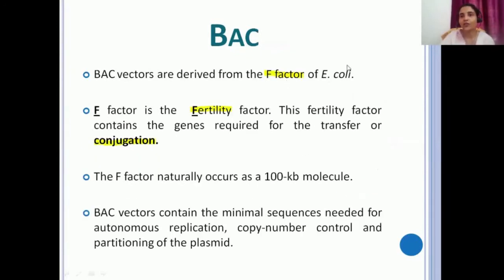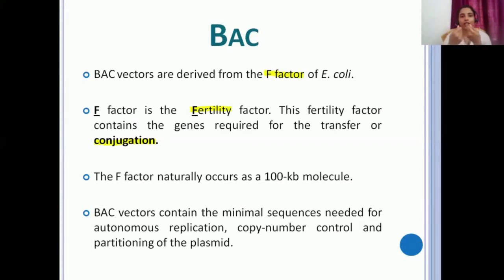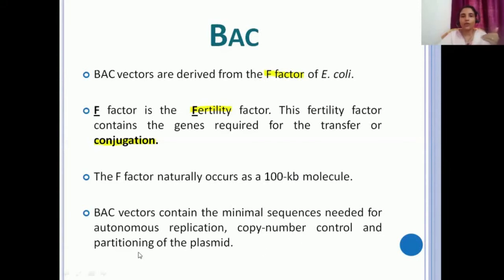BAC vectors are derived from the F-factor of E. coli. The F-factor is the fertility factor, which contains genes required for conjugation — the transfer of genes from one bacterium to another. The F-factor naturally occurs as a 100 kilobase molecule. BAC vectors contain the minimal sequences needed for autonomous replication, copy number control, and partitioning of the plasmid.